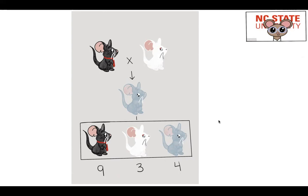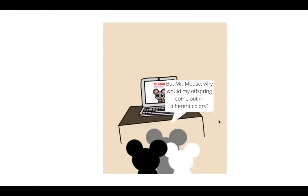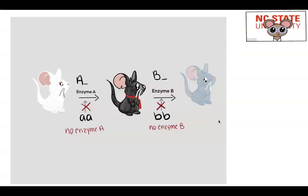This is because your father, being pure black, and your mother, being pure white, can only make your coloring due to the alleles present. However, if you cross with your siblings, you would produce all three colors in a ratio of nine to three to four. But Mr. Mouse, why would my offspring come out in different colors? Good question.